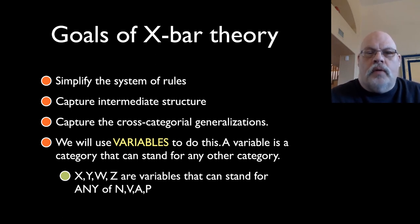So let's talk about what we want out of our theory. We want our theory to simplify that very complex list of rules I started with. We want it to capture those intermediate structures that we saw data for. We want it to capture the cross-categorial generalizations we just talked about. The optionality and phrasality of non-head modifiers. The headedness of every phrase. The fact that we had three rules. So what we want to do is propose a system that is going to do that for all of the categories we might have.